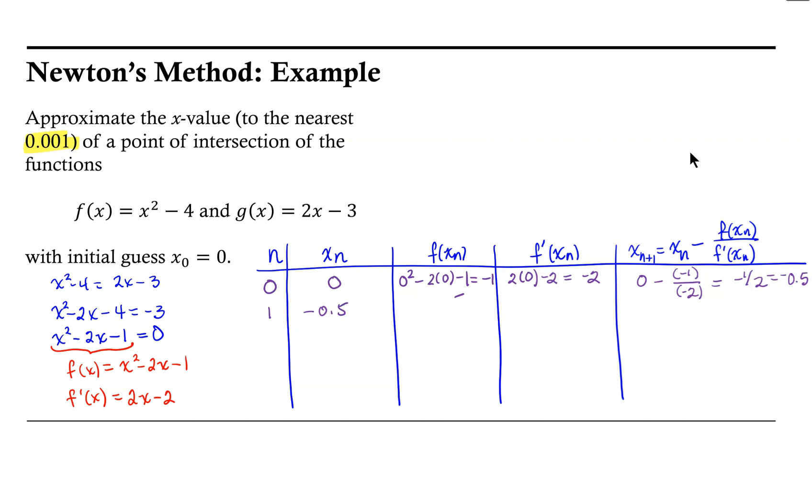Now we need to evaluate our f(x) that we're using for Newton's method at -0.5. When we evaluate that function at -0.5, we get 0.25, or one quarter. And then evaluating the derivative at -0.5 again, that will give us a value of -3.